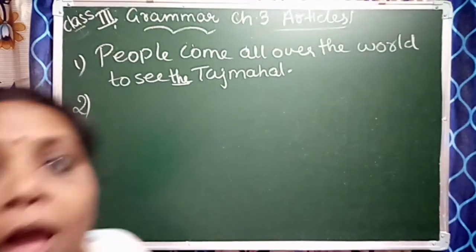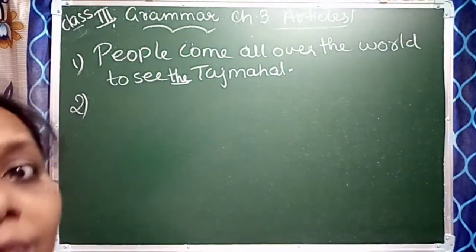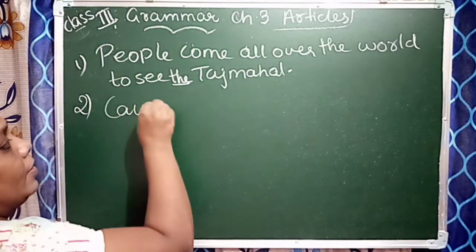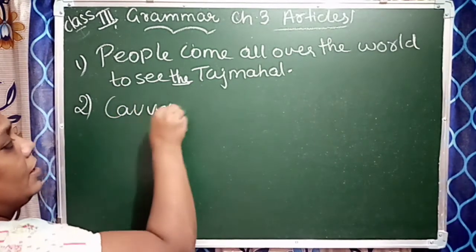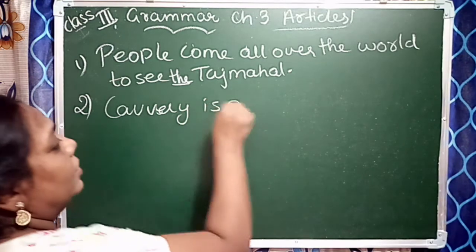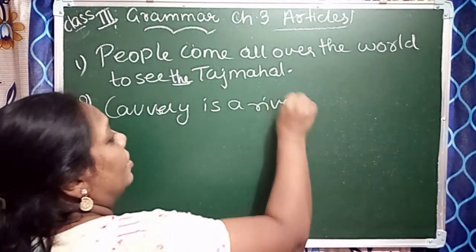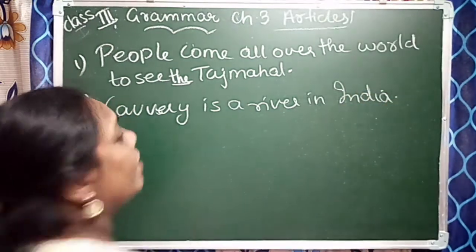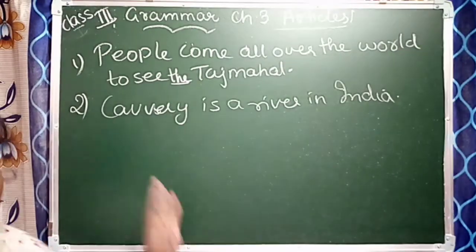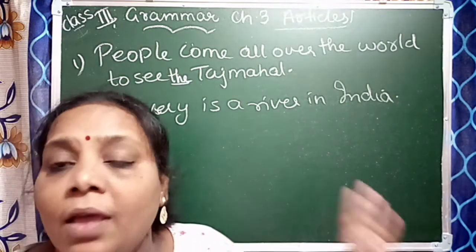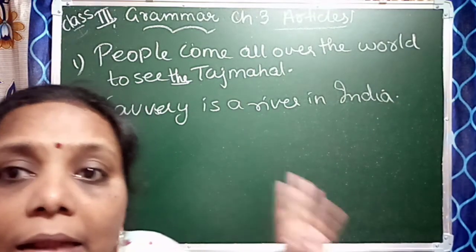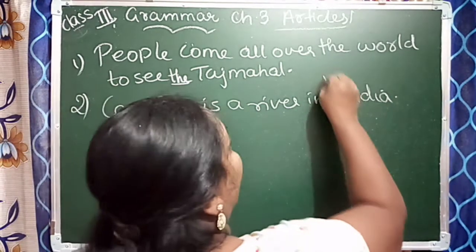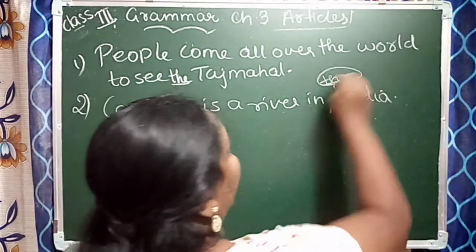Second one: 'Kaveri is a river in India.' It is a river name. Is it proper? We need 'the' here — 'in India' becomes 'in the India'. So 'the' will come here.